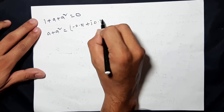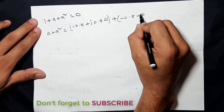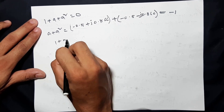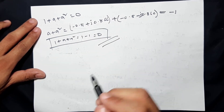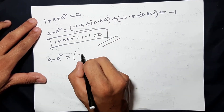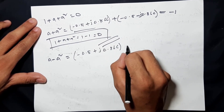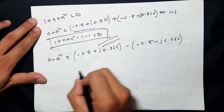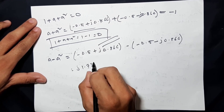Plus j 0.866 plus minus 0.5 minus j 0.866. Simplifying, 1 plus A plus A squared equals zero. For A minus A squared: it is minus 0.5 plus j 0.866 minus (minus 0.5 minus j 0.866), which simplifies to j 1.732.